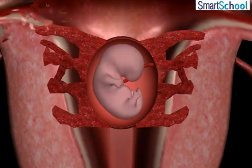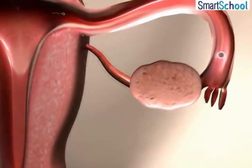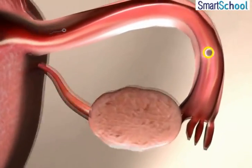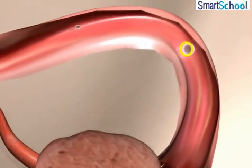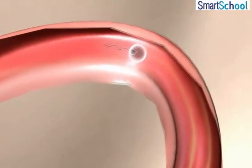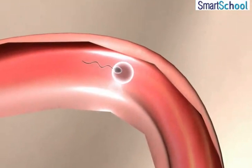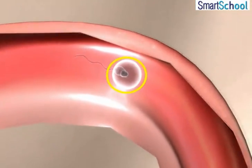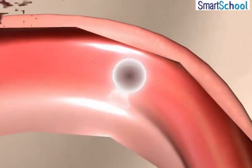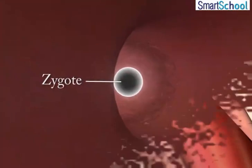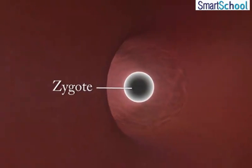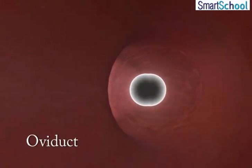Once the male and female gamete, that is sperm and ova, fuse, fertilization occurs and a zygote is formed inside the oviduct.